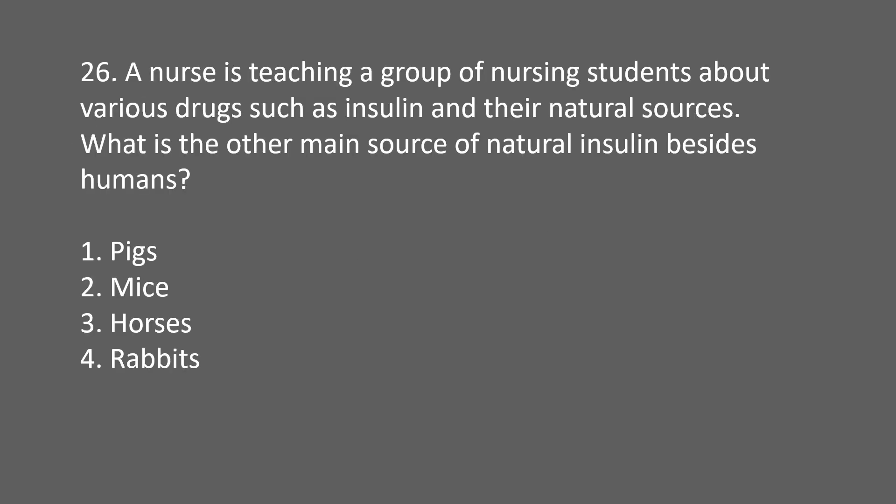A nurse is teaching nursing students about various drugs such as insulin and their natural sources. What is the other main source of natural insulin besides humans? 1. Pigs. 2. Mice. 3. Horses. 4. Rabbits.